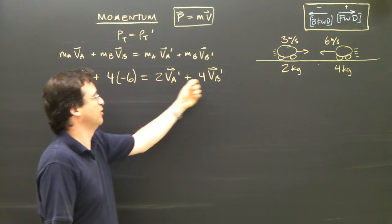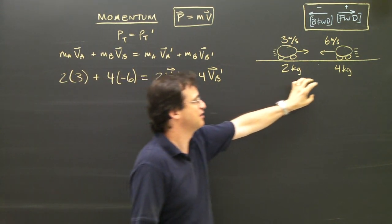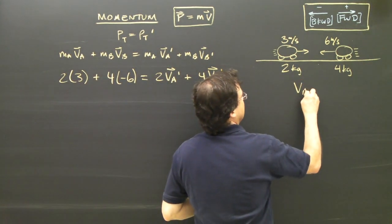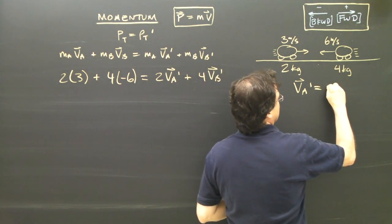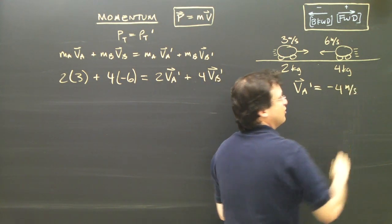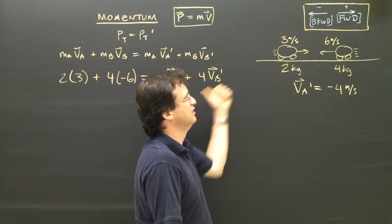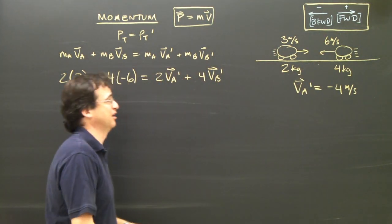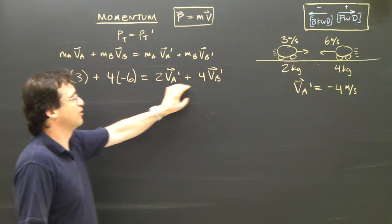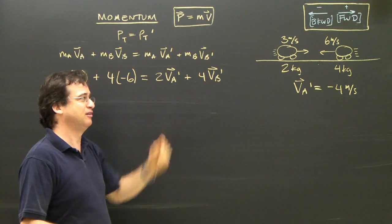So what I've got to do is I've got to give you one of these. So in a question like this, there would be a final velocity given. For instance, it might say VA afterwards is negative four meters per second, or it might say four meters per second to the left, and then you've got to put the negative in because backwards or to the left is negative. So if one of those is given, then you can do this. If not, then we've got a problem.